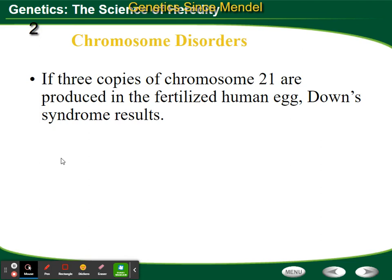Another type of chromosome disorder occurs when you get three copies of chromosome 21 in a fertilized human egg — meaning either the sperm or the egg had an extra copy of chromosome 21. When fertilized, the zygote has an extra copy of chromosome 21. That's called Down syndrome. This happens because meiosis doesn't work properly and one sex cell gets an extra copy. If that cell is fertilized, Down syndrome results.